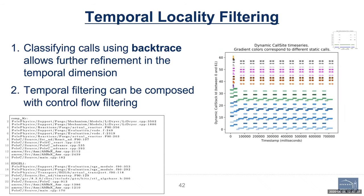This graph shows that if you do our approach, you do better than the Girvan-Newman clustering in terms of fewer experiments needed. For temporal locality clustering, the answer is very easy: we use backtrace information — just the backtrace associated with the call. The graph shows the same trace processed based on backtrace information, where the gradient of the same color shows all the backtraces associated with the same static source location. You get much finer-grained refinement on the X axis and uncover a lot more structure.